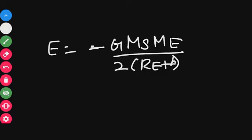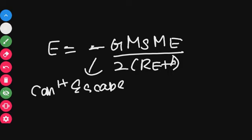The negative sign indicates the satellite is earth-bound and cannot escape. When the height approaches infinity, the total energy approaches zero, meaning the satellite is completely free from gravity's influence. This is all about the energy of an orbiting satellite.